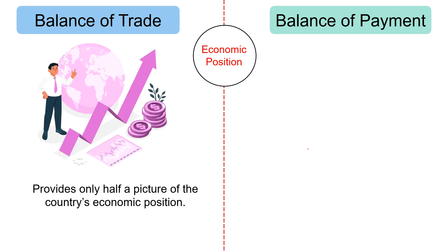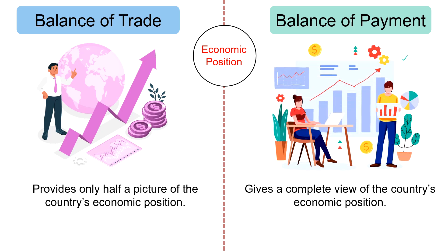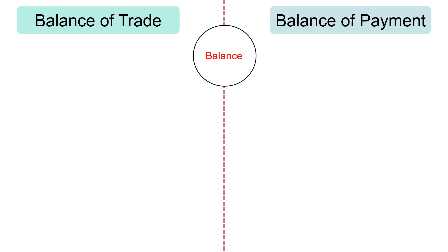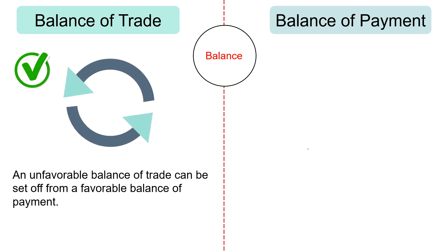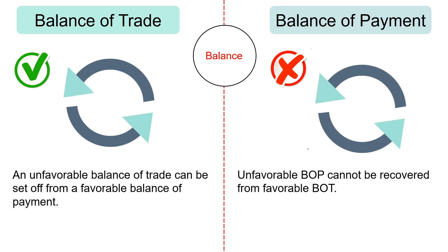Balance of trade provides only a half picture of a country's economic position and does not depict the full economic performance of the nation. Conversely, balance of payment gives a complete view of the country's economic position and reflects the real economic performance of a nation. An unfavorable balance of trade can be set off from a favorable balance of payment. Conversely, an unfavorable balance of payment cannot be recovered from a favorable balance of trade.